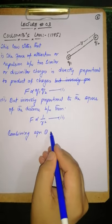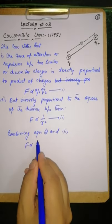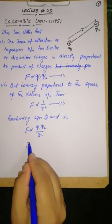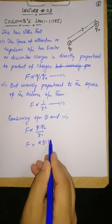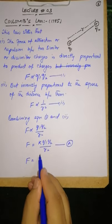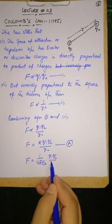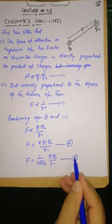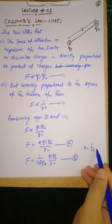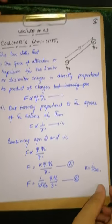Combining equation one and two, now force is directly proportional to q1 q2 divided by r square. Removing proportionality, we put a constant. So normally in metric we use - the value is 1 over 4π epsilon not, q1 q2 divided by r square. This is equation number B. This constant k equals 1 over 4π epsilon not.